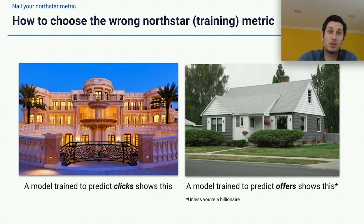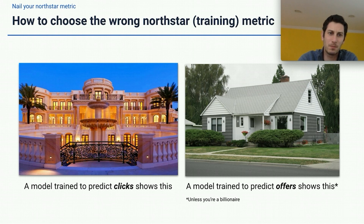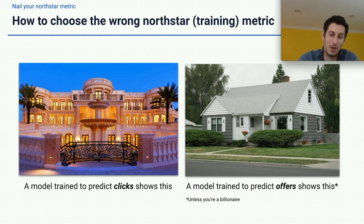Here's an example of how to choose the wrong North Star training metric. When we first started building a recommendation product for home shoppers, we optimized the algorithm for clicks. So it showed homes like mansions — super fun to look at, but no one's going to buy them unless you're a billionaire. A better approach was to focus the model on buyers that would actually make an offer on a home, not just click on the listing. That ended up showing homes that were a lot more modest but also a lot more realistic. They got fewer clicks, but they ended up getting many more offers — and that's ultimately what leads to higher sales.